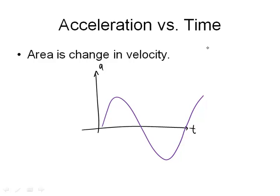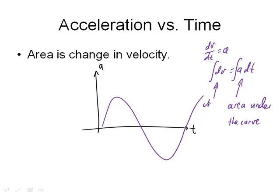What we can get from this graph is the change in velocity. And it's an integral. So, remember that dv/dt is equal to acceleration. And so, dv is equal to a dt. And so, if I integrate the right-hand side, that's the area under the curve.